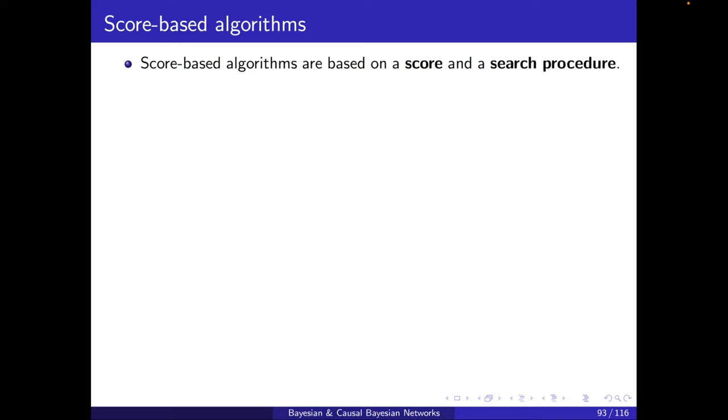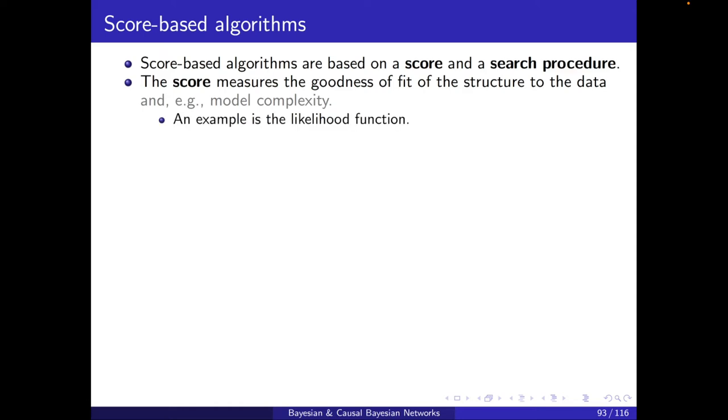Score-Based Algorithms are based on a score and a search procedure. The score measures the goodness of fit of the structure to the data. It also captured model complexity in the BIC, but at the end of the day, that was to increase the goodness of fit to the test dataset. We have a score, it could be, for example, the likelihood function. And we have the search procedure. An algorithm is required to search for the structure with the maximum score.